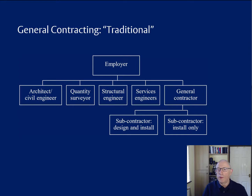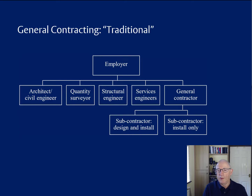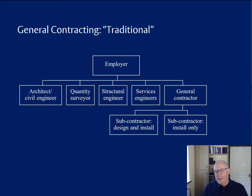There are basically two types of subcontractor: those who only install what's already been designed by the design team, and those who design the things that they install — such as air conditioning, lifts, cladding, and so forth. This is complicated because the general contractor has no design liability, but if they employ a subcontractor who does have design liability, that liability cannot pass through the general contractor to the employer. Therefore, separate contracts must be set up between a designing subcontractor and the employer so that design liability goes directly to the employer.